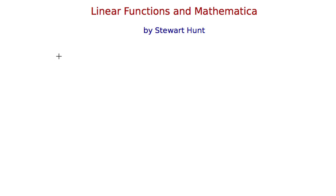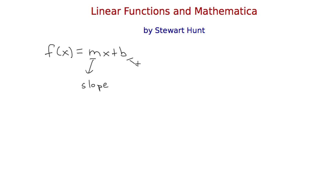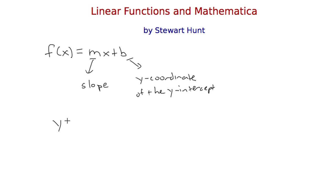The simplest functions in mathematics are linear functions, and a linear function is a function of this form: f of x equals mx plus b. The letter m represents the slope and the letter b is the y-coordinate of the y-intercept. This comes from the equation of a line, written as y equals mx plus b, which is the more familiar form you might know.